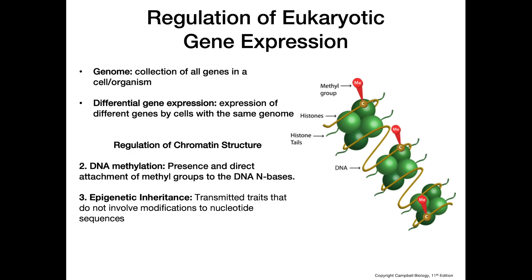Lastly, we have something called epigenetic inheritance. These are transmitted traits that do not involve modifications to the nucleotide sequence. Epigenetic inheritance could be the inheritance of specific methylation patterns on our DNA. The experiences of your parents and the epigenetic marks they acquire on their DNA can sometimes be passed down to offspring, depending on the gene and other factors. When specific methylation patterns are inherited, that is called epigenetic inheritance.